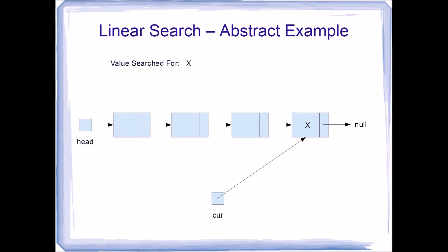That's an example of successfully locating a value, but what if we didn't find what we were looking for? In that case, the cur pointer would end up pointing to null. This means we've examined each node without finding the value, so we return 'not found'.